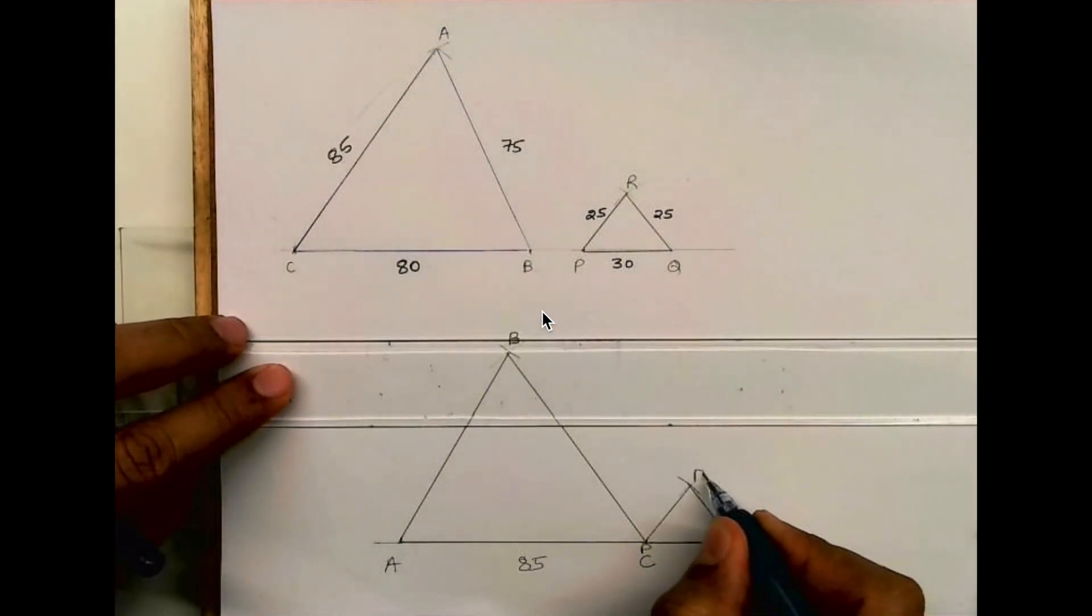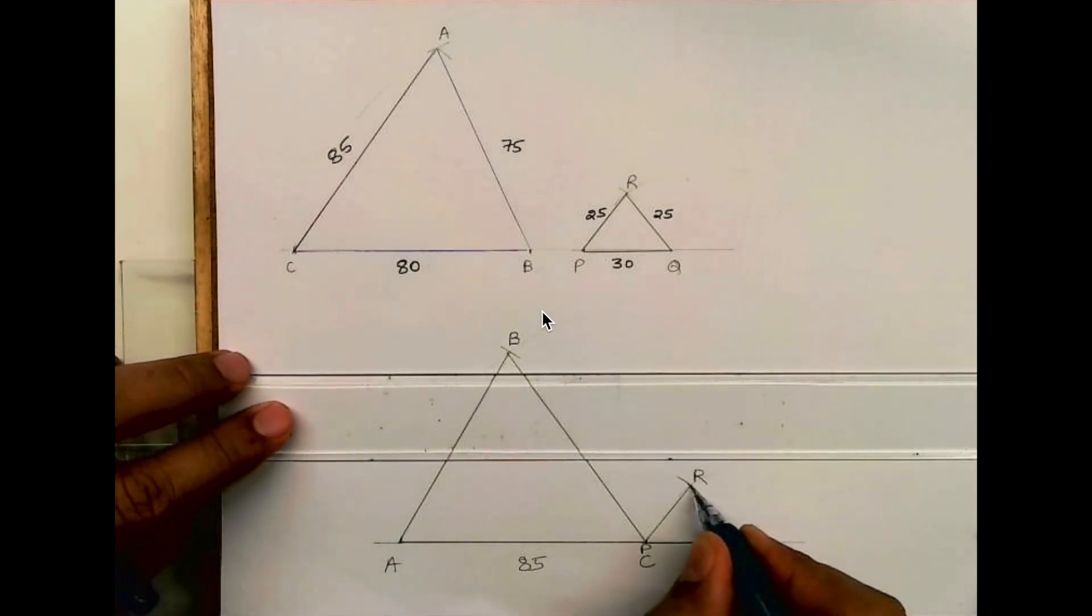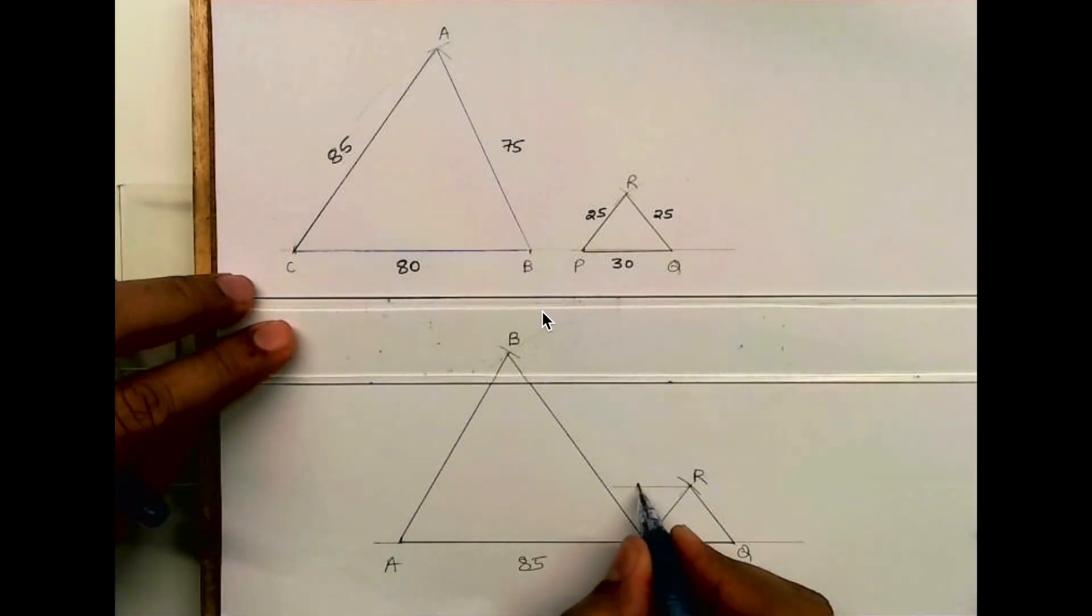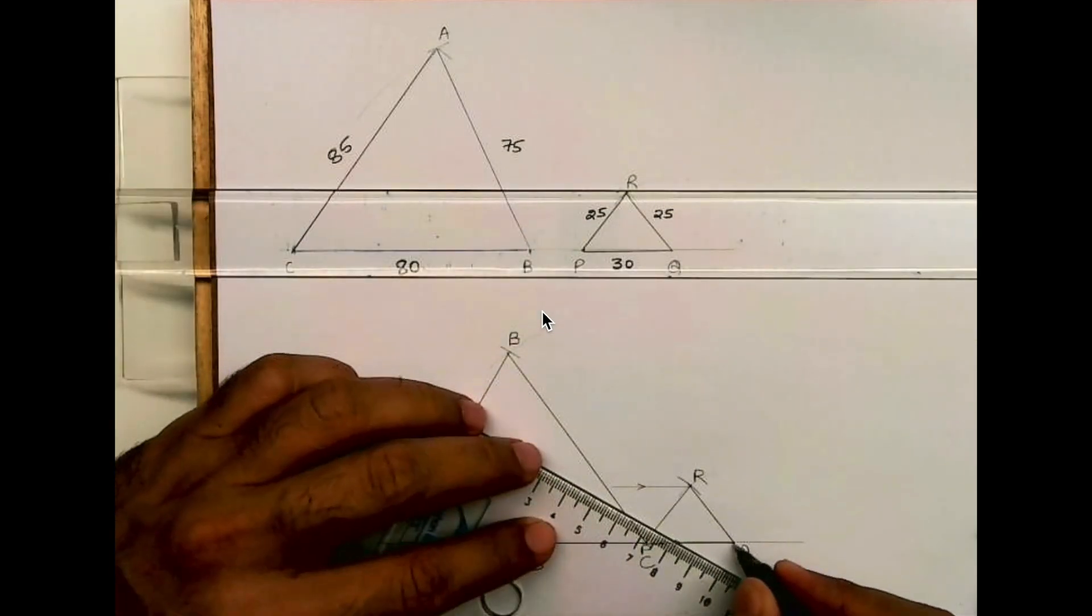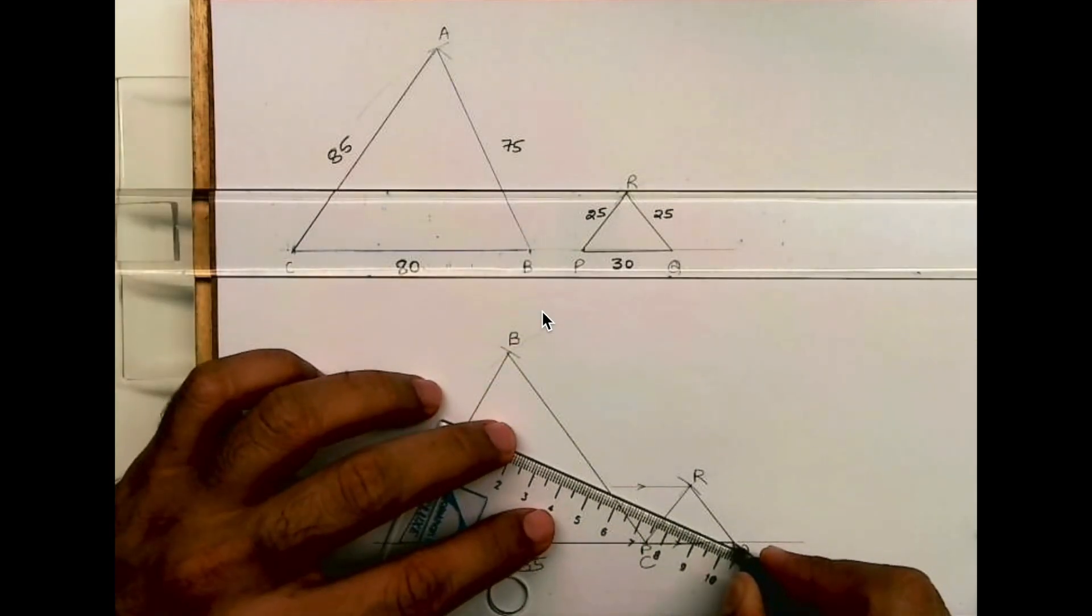Now we'll draw a horizontal line from R. Instead of triangle PQR, I will have triangle PQS.